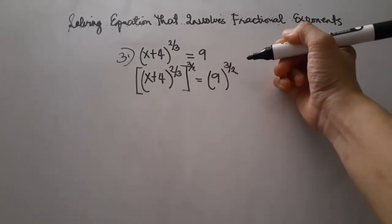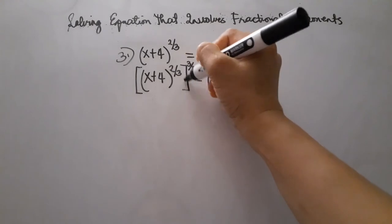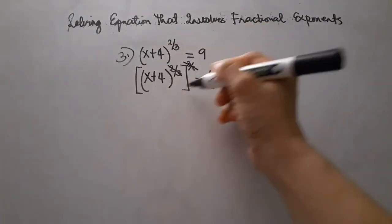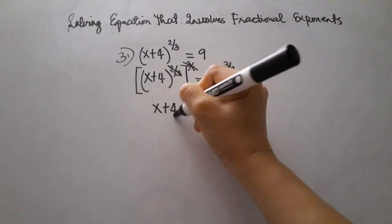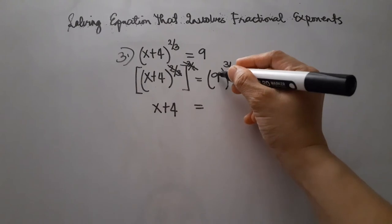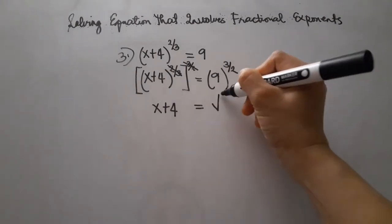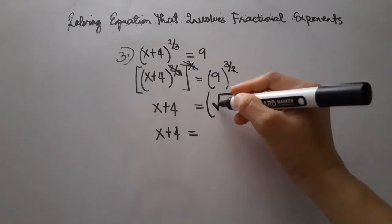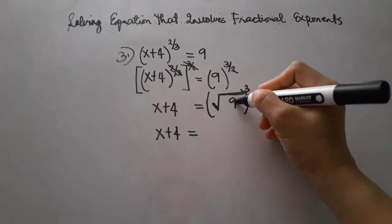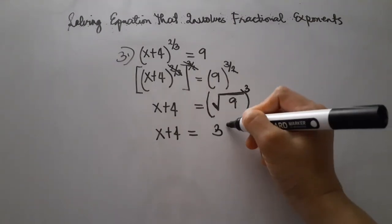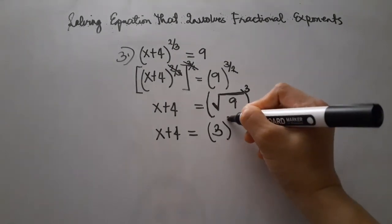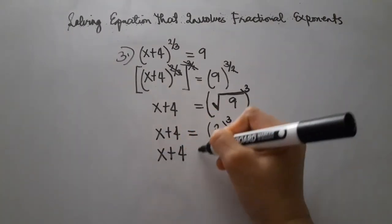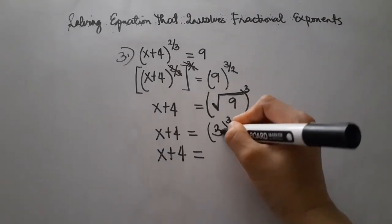We raise both sides by the reciprocal of 2 thirds to cancel the exponent. The reciprocal is 3 halves. So 2 times 3 is 6, and 3 times 2 is 6, giving 6 over 6 equals 1. The exponent cancels, leaving x plus 4. The right side is 9 raised to the power of 3 halves, which is the square root of 9, raised to the power of 3.